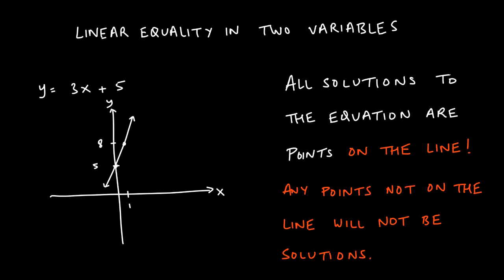What we've done in the past is talk about linear equalities. I want to emphasize the difference between equations and inequalities in two variables. This is a linear equation in two variables — 'equation' because it has an equal sign, 'linear' because the degree of each variable is one, and 'two variables' because you have x and y. As a reminder, this is also in slope-intercept form.